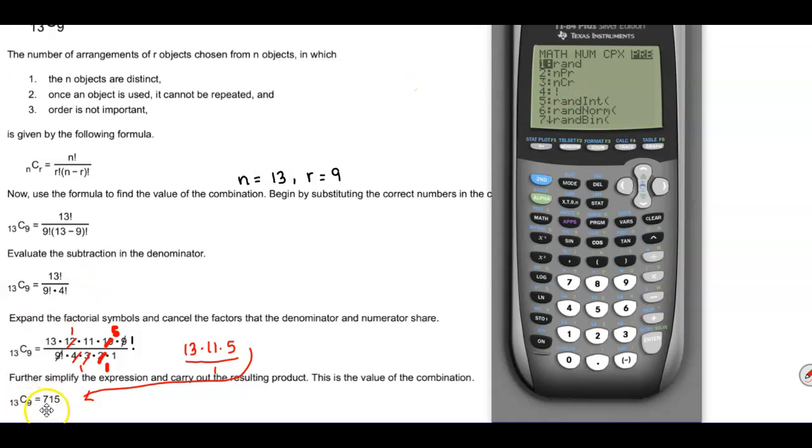Now if we want to calculate this, we're going to go to our clear screen, so we're going to hit second and then clear. And then since the n number is on the right-hand side, we're going to start with that number which is 13.